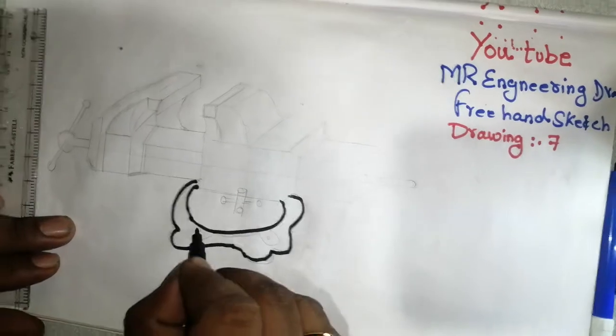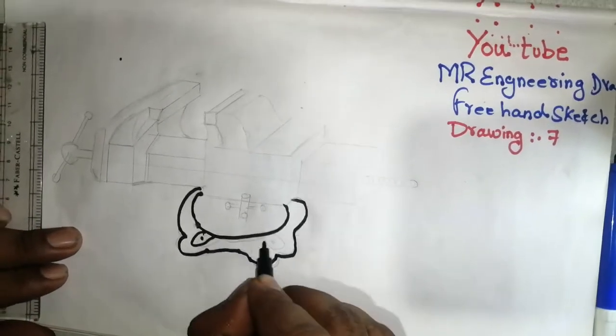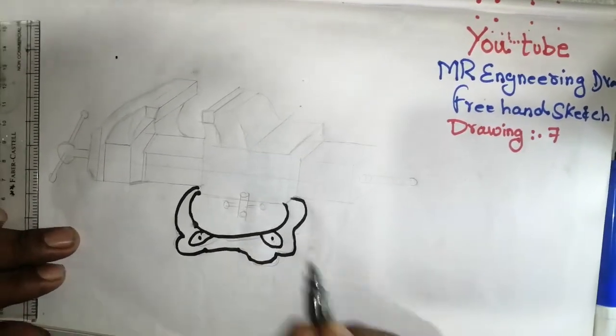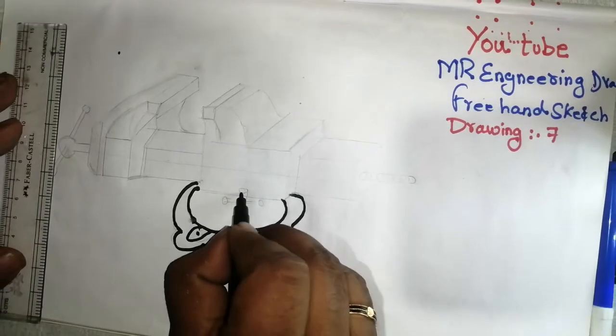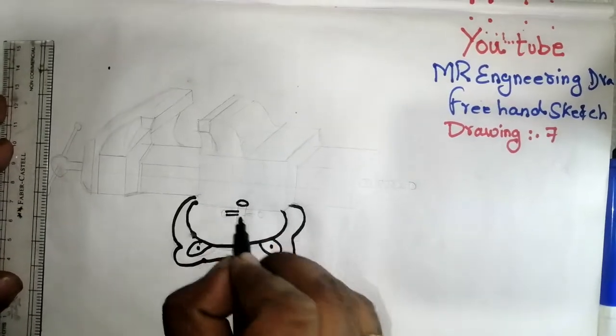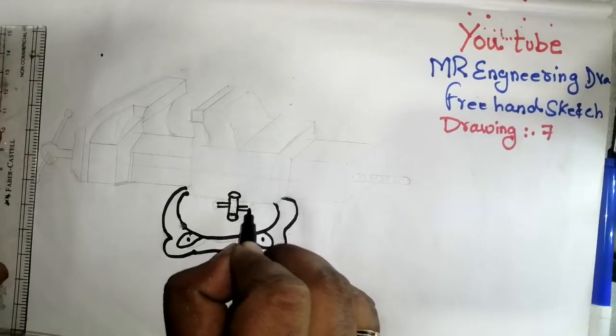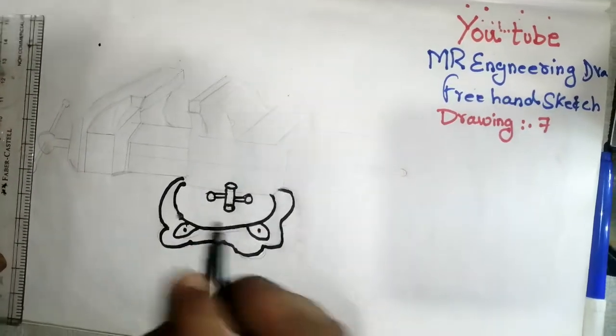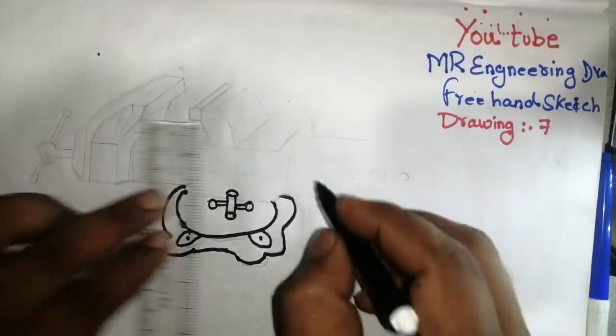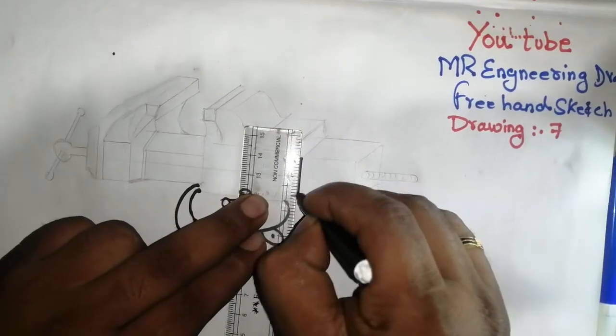This is the base. You have to observe the drawing more than five to ten times. After practicing it will come very easily. This is a bench vise for the fitter who is using. After that, observe the drawing.